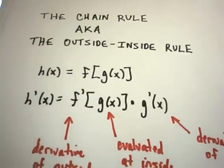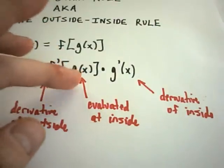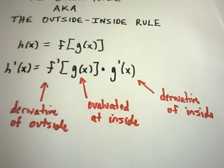So in terms of this outside inside rule, notice you basically get the derivative of the outside function, evaluated at the inside function, and then you multiply that by the derivative of the inside function. And that's the basic idea with the chain rule.